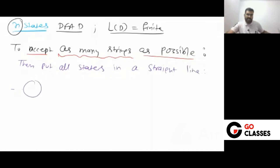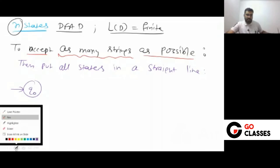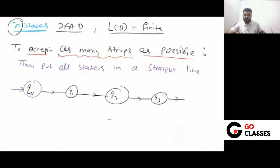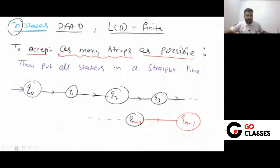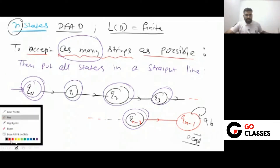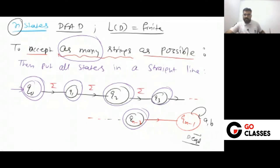Put all states in a straight line from the initial state: Q0, Q1, Q2, ... Q(n-2), Q(n-1). Total N states. You can make Q0 final, Q1 final, Q2 final, ... all of them final, except the last state. Don't make the last state final — it becomes your dead state. Each transition on sigma goes to the next state.